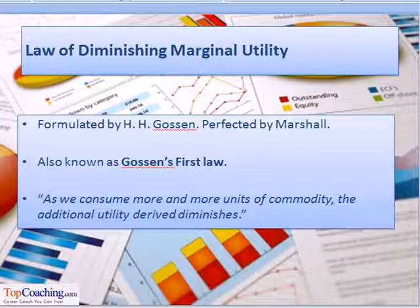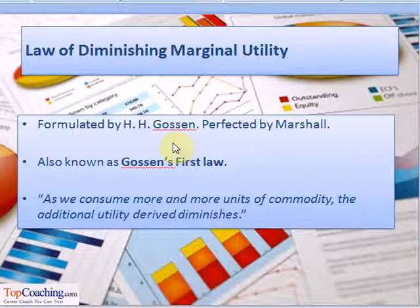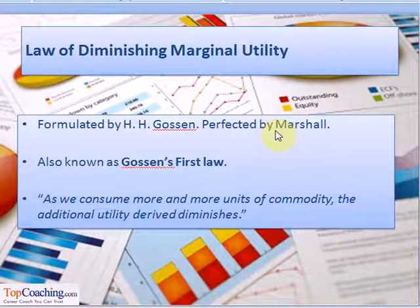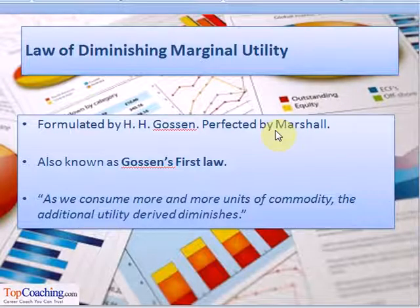A related concept is the law of diminishing marginal utility. This law was formulated by economist H.H. Gossen and is therefore also known as Gossen's First Law. It was later perfected by Professor Marshall. The law states that as we consume more and more units of a commodity, the additional utility derived from its consumption diminishes. In other words, as the consumer consumes more of a commodity, total utility will increase but at a decreasing rate.